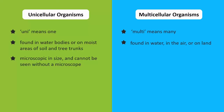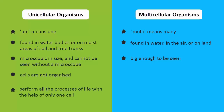Most multicellular organisms are big enough to be seen. The cells in a unicellular organism are not organized — they can perform all the processes of life, such as moving, feeding, and respiring, with the help of one cell alone.